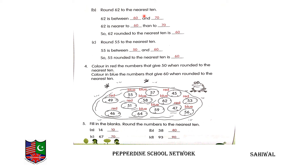Round 62 to the nearest 10. We have 62. Its ones place digit is 2. So we round it to the smaller 10 — 60. 62 is between 60 and 70, and 62 is near to 60, not 70. So 62 rounded to the nearest 10 is 60.